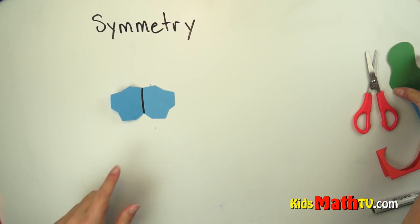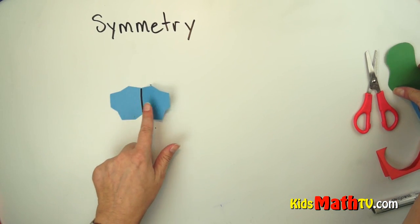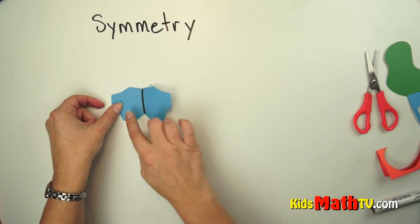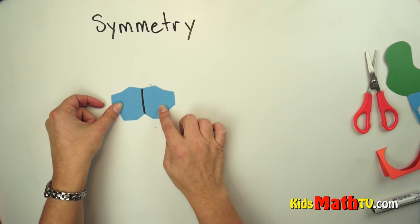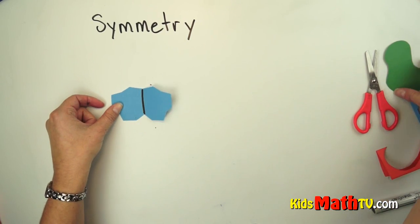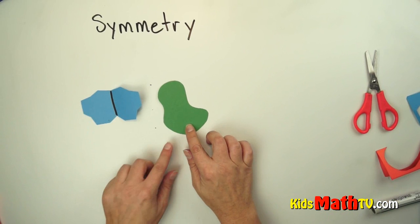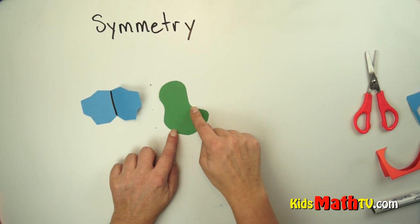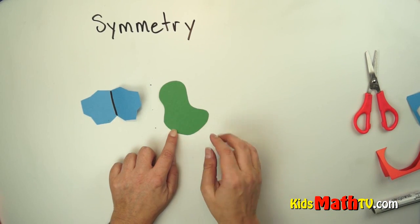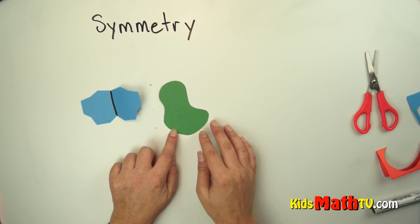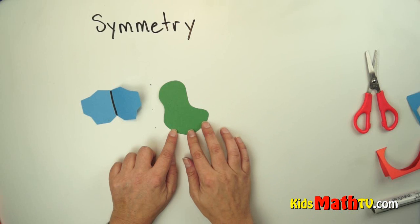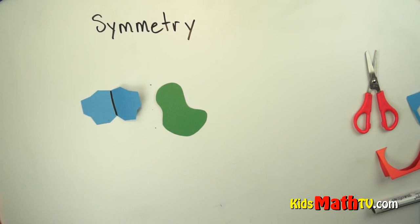Symmetry means the same shape and same size if it were to be cut in half. Non-symmetry means there's no way that a shape could be split in half and have the same shape and size on each side. That brings us to the end of our lesson on symmetry.